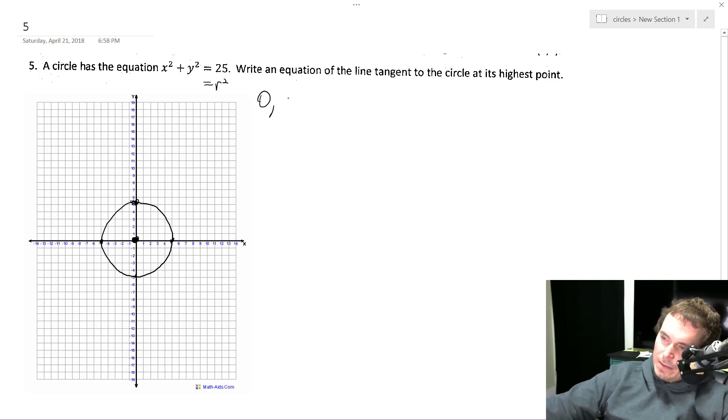So how do we do that? We do 0 plus y squared - we plug in 0 for x, then we get 25. Square root of both sides, y is going to be equal, well, plus or minus 5, but in this case it's going to be a positive 5, we want the highest part.